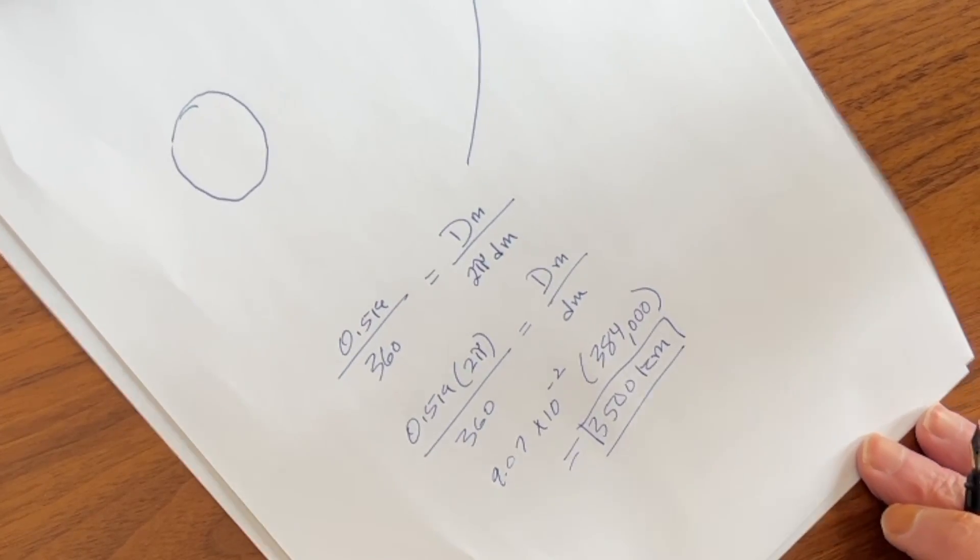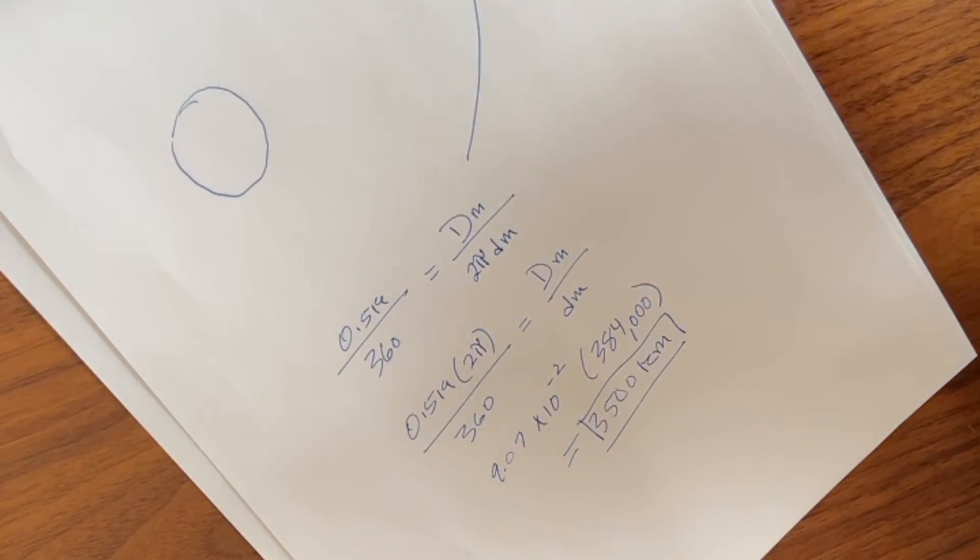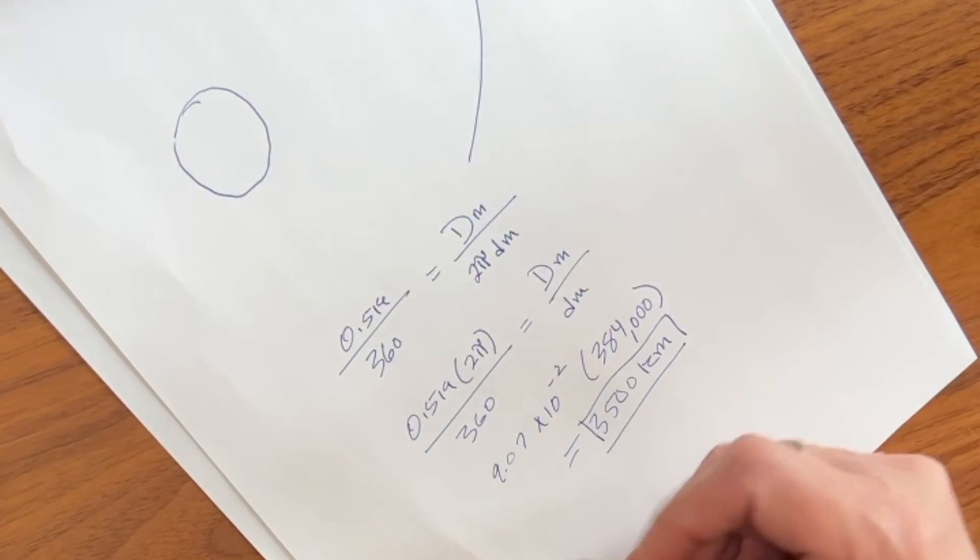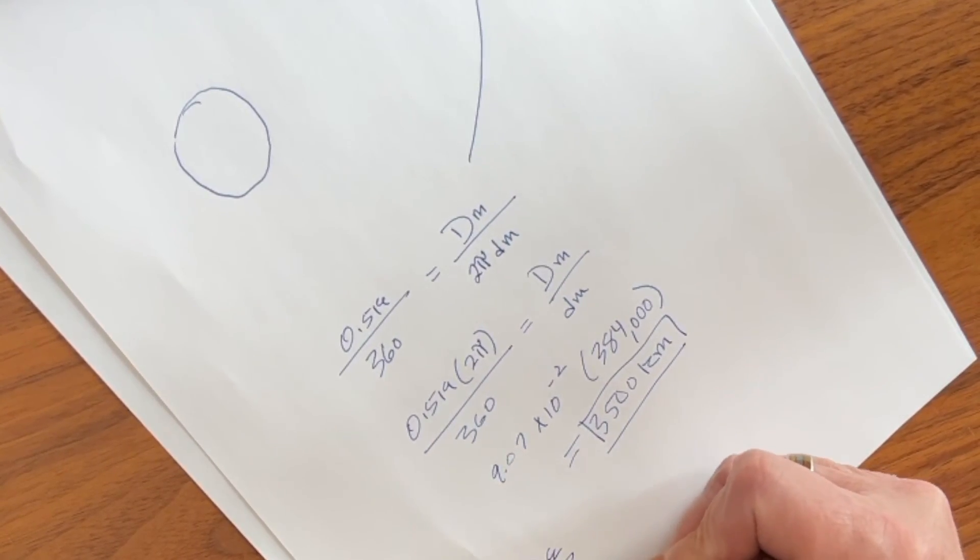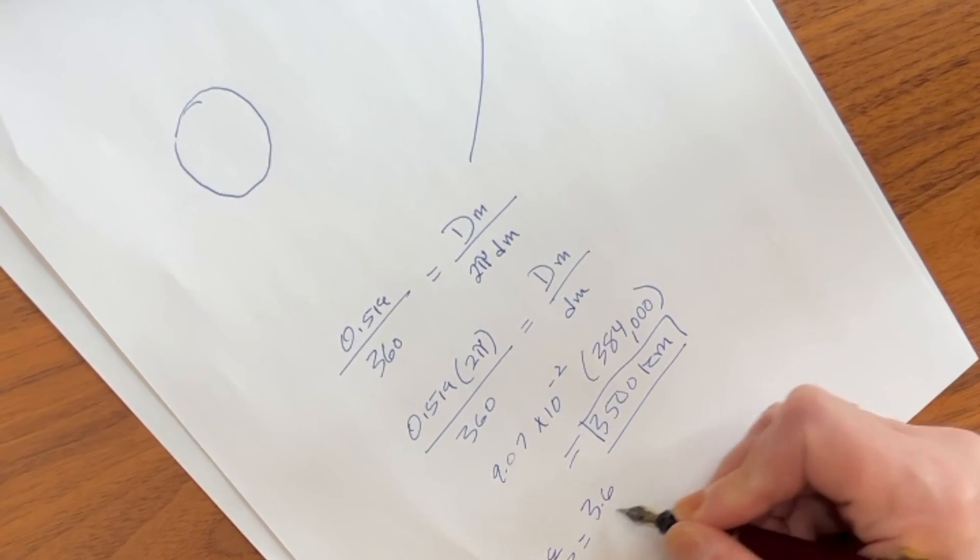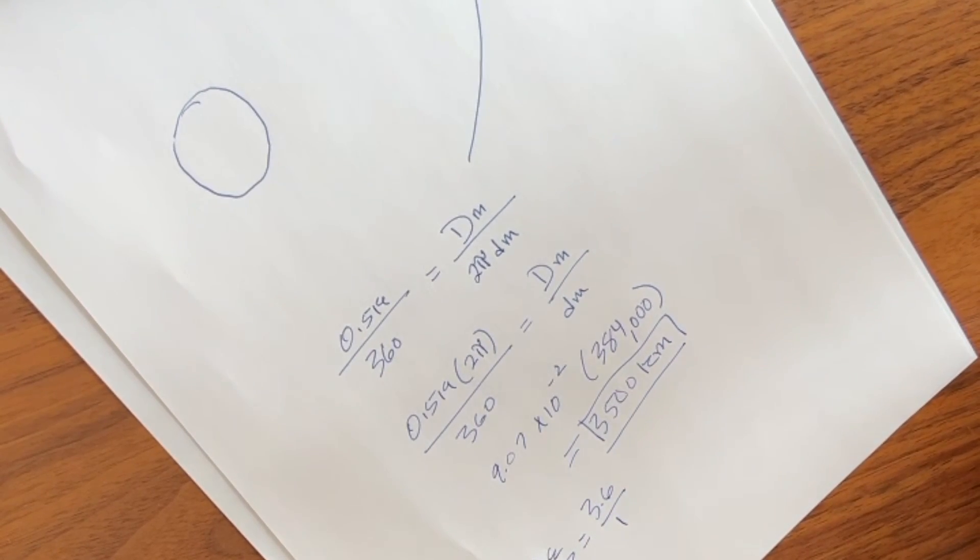Now you recall from our last video, what's the ratio of the diameter of the earth to the diameter of the moon? So diameter of the earth over the diameter of the moon equals 3.6 over 1.